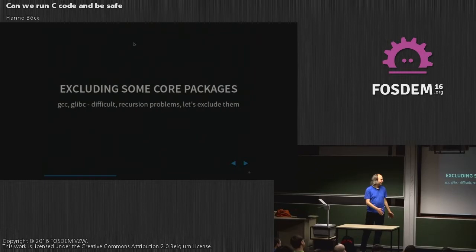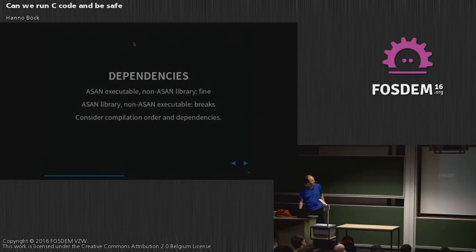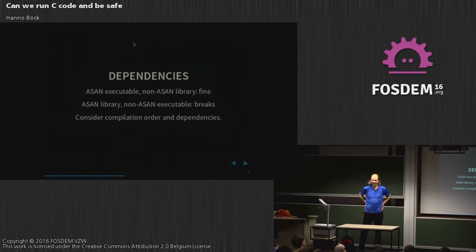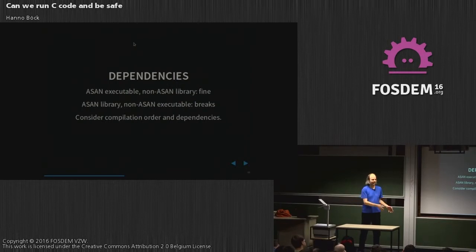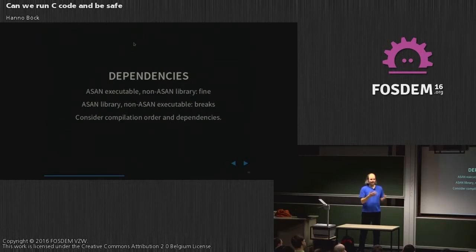So at least for a start I said, let's disable them and compile everything else with it. The next problem is that if you combine code with AddressSanitizer and without AddressSanitizer, you get some problems. It is no problem to have an application compiled with AddressSanitizer and a library not compiled with AddressSanitizer. But the other way around doesn't work. So if you start compiling OpenSSL with AddressSanitizer, then immediately all the tools that are linked against OpenSSL won't work anymore. This means we also have to exclude all the dependencies of GCC, and we have to consider the order in which we do things so the system remains usable.